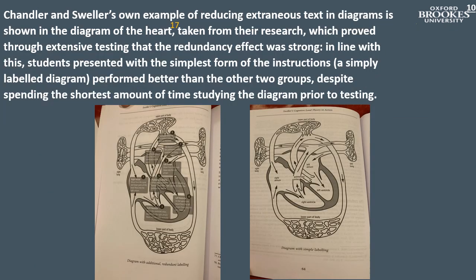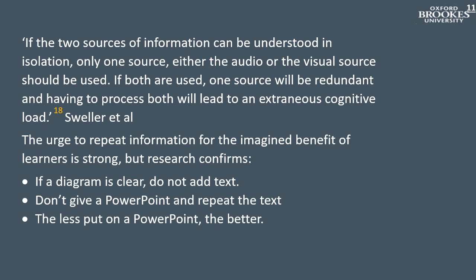Shown here is Chandler and Sweller's own example of reducing extraneous text and diagrams. Students presented with the simplest form of these instructions performed better than the other two groups, despite spending the shortest amount of time studying the diagram prior to testing. Other elements of restricting extraneous information include not delivering PowerPoints by simply reading out the content, and avoiding the split attention effect of two sources of information placed apart, where excessive cognitive load is caused by the fleeting effect of transient information. In the words of Sweller and colleagues: if the two sources of information can be understood in isolation, only one source — either audio or visual — should be used. If both are used, one will be redundant and processing both will lead to an extraneous cognitive load. If a diagram is clear, do not add text. The less put on the PowerPoint, the better.